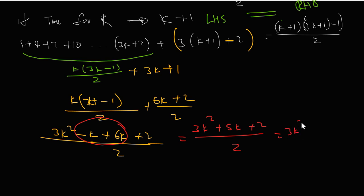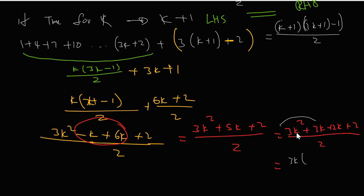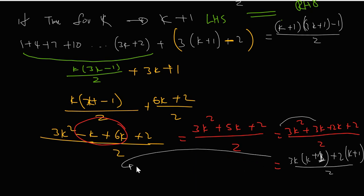We can break down five k as three k plus two k, giving us three k squared plus three k plus two k plus two, all over two. Now we factor: taking out three k from the first two terms gives three k times open bracket k plus one, and taking out two from the last two terms gives two times k plus one. Correcting the factor — when taking out three k, what remains is one, not three.